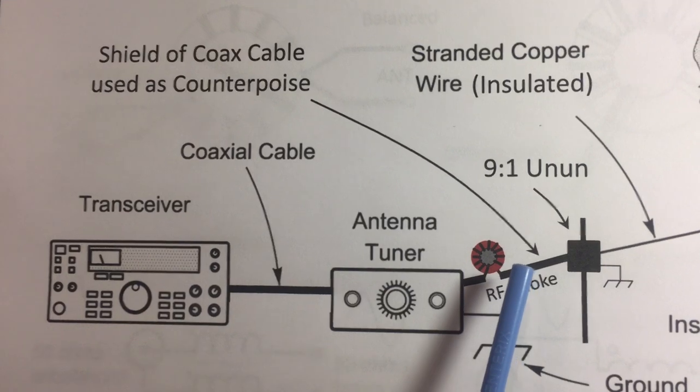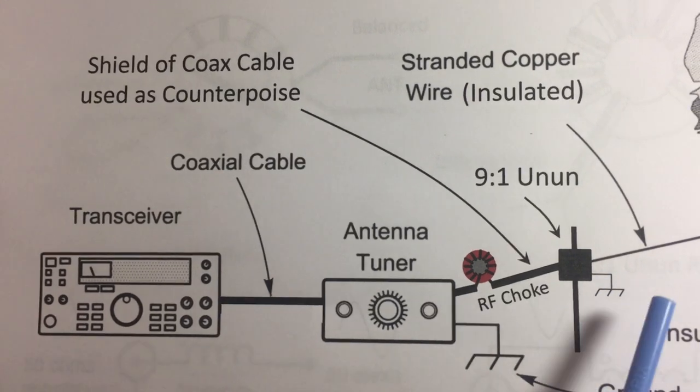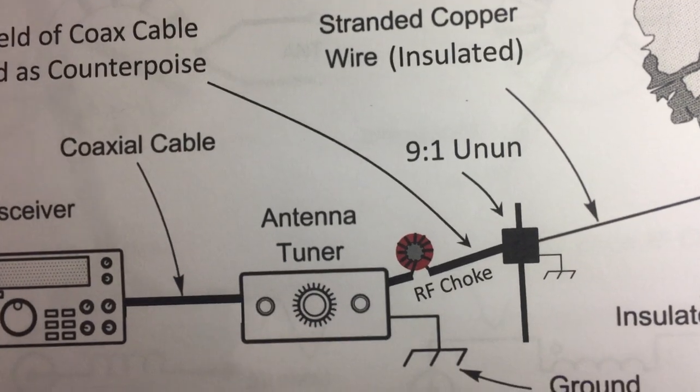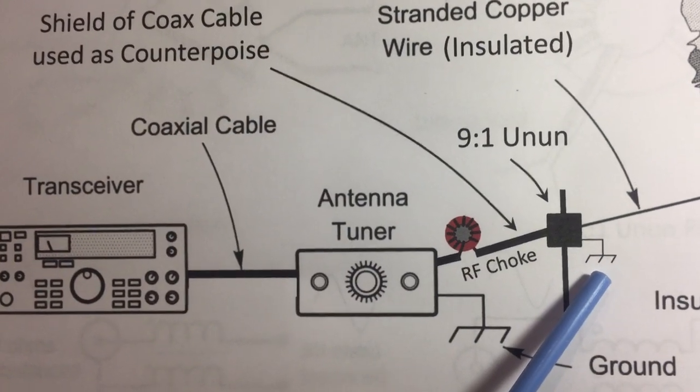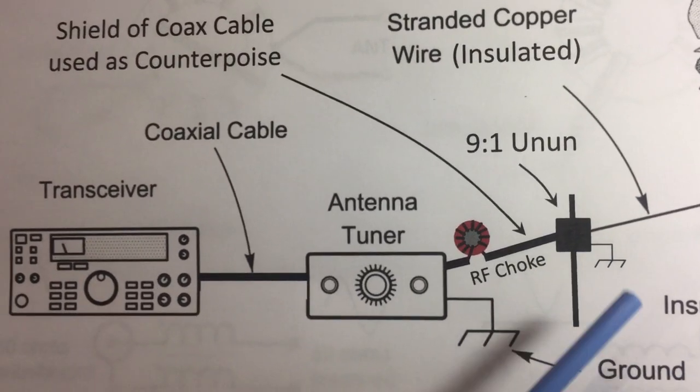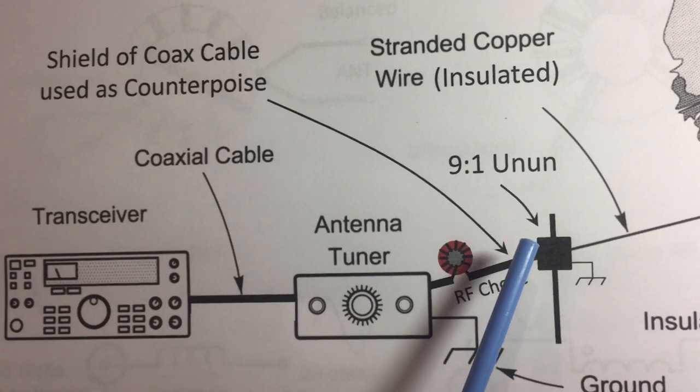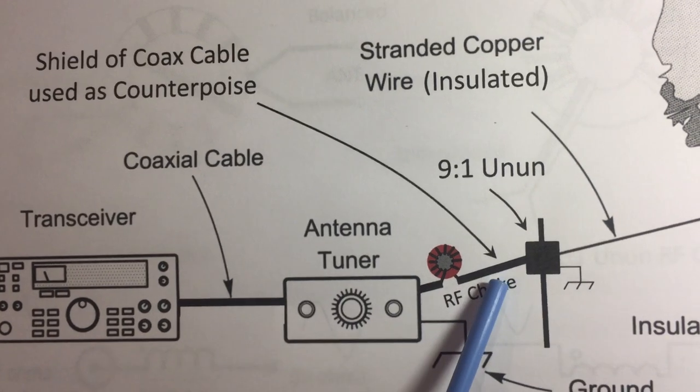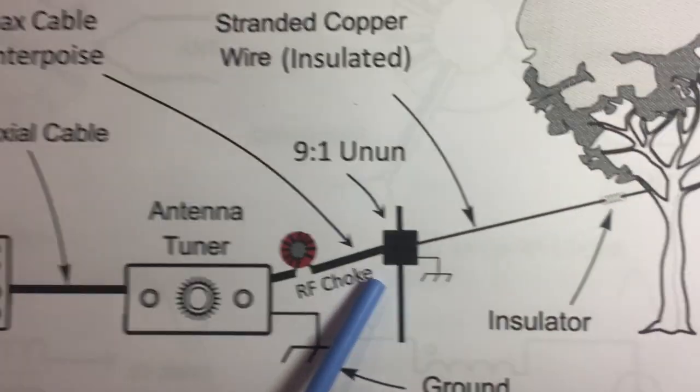Other alternatives using a nine-to-one un-un include using the ground lug with a long wire one wavelength long as a counterpoise, or you can use radials close to the ground, or a combination of both. There's good information on the internet, but my situation being in the attic and well above ground, I elected to use the coax and it works fairly well as you'll see in part four.